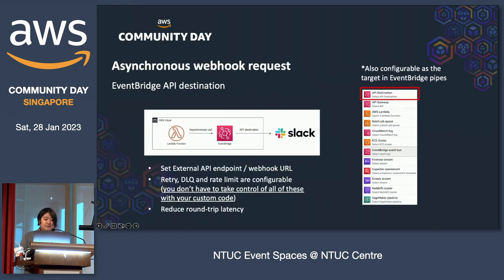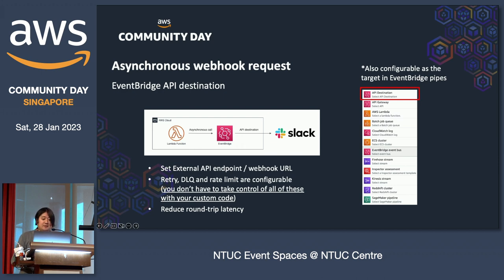There is also a useful EventBridge feature called API Destinations. API Destinations not only allows asynchronous calls to external API endpoints, but also allows retries, dead-letter queues, and rate limits to be configured, so we can eliminate the need to implement these processes ourselves. It can be configured as the target of EventBridge Pipes, so when combining both, there may be cases where you can remove the Lambda function that was only used for calling external APIs.